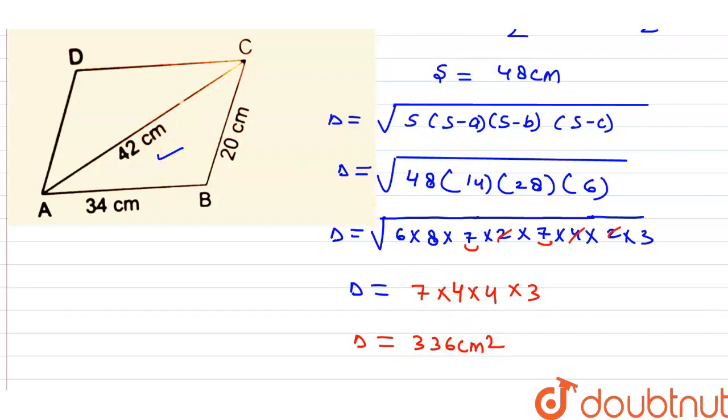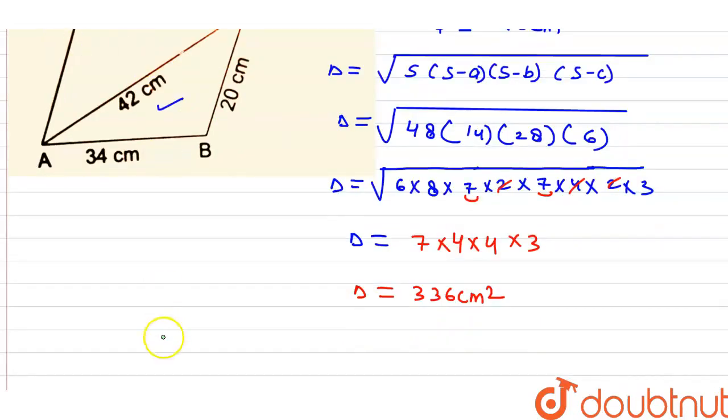Now, we have to find ABCD area. ABCD area is 2 into 336. This area is double, which is, the answer is 672 cm². Okay? Thank you, friends.